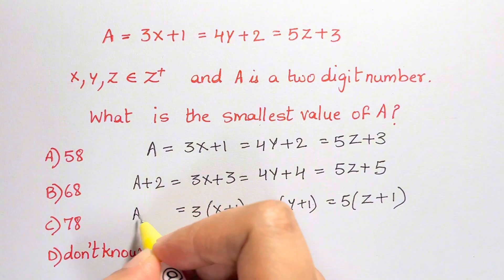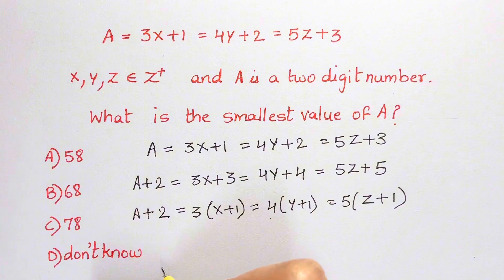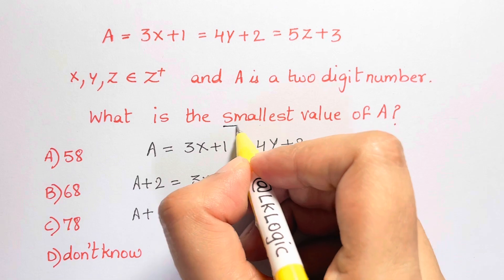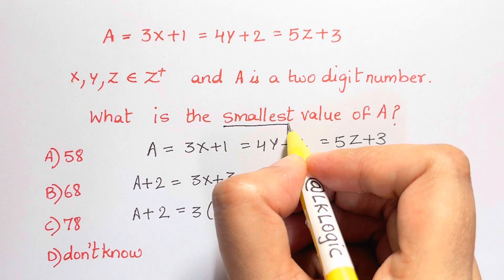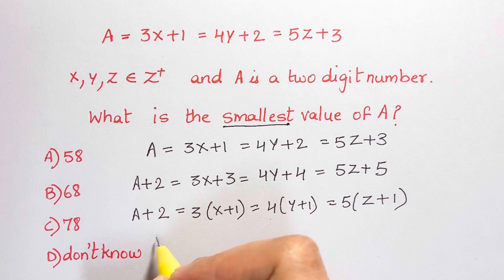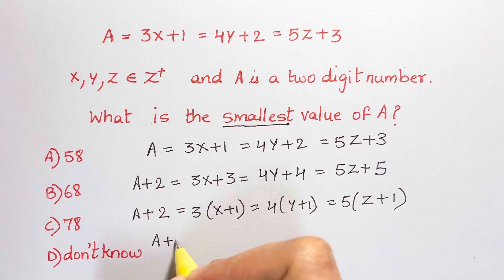Now, whenever you have the word smallest in the question, we find the least common multiple. Always smallest, minimum, all those kinds of words, we find the LCM. So A plus 2 is equal to the LCM.